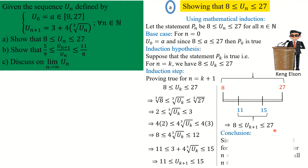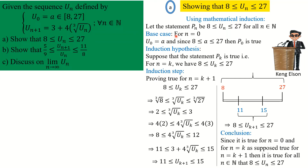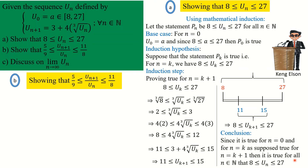We conclude: since P(0) is true (base case), and assuming P(k) is true we proved P(k+1) true (induction step), by mathematical induction the statement P(n) is true for all n in the natural numbers — that is, u_n is between 8 and 27. That is the proof. Now let's move to part (b): showing that u_{n+1}/u_n lies between 5/9 and 11/8.